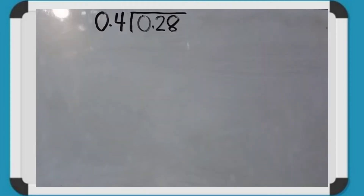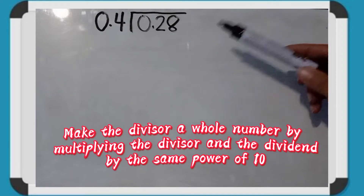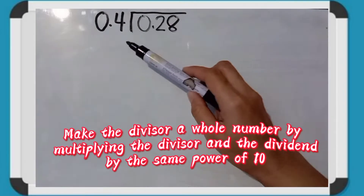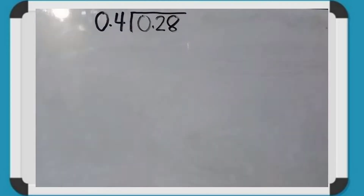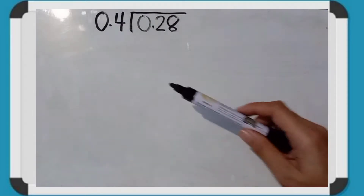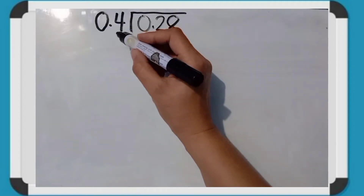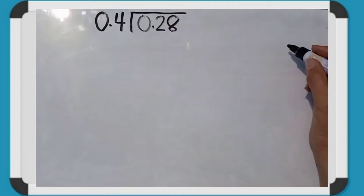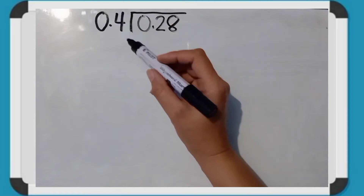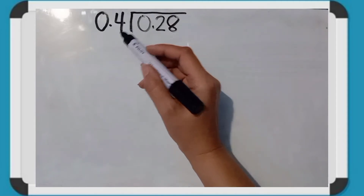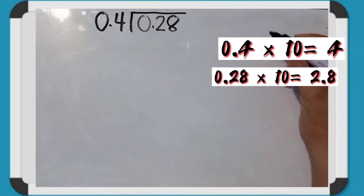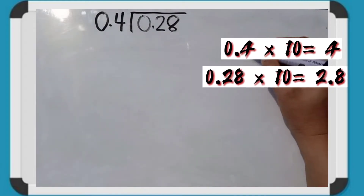4 tenths, which is the divisor, will be written outside the division bar. The first step is to multiply the divisor by a power of 10. When we say power of 10, those are 10, 100, 1000, 10,000, and so on. What power of 10 do we multiply by 4 tenths to make it a whole number? The answer is 10. So, 4 tenths times 10 equals 4.